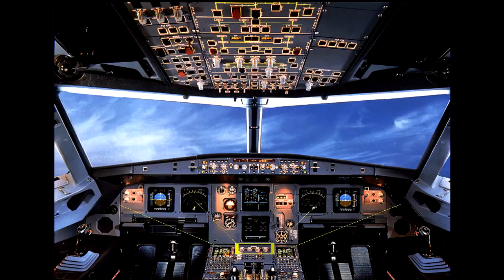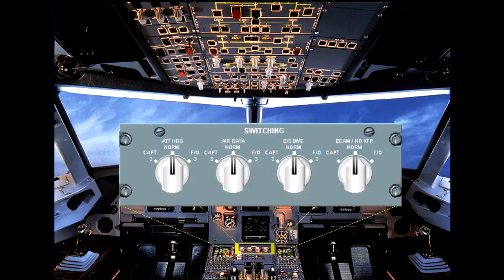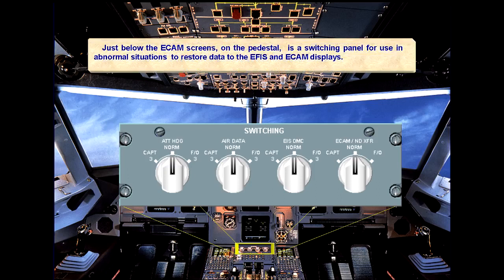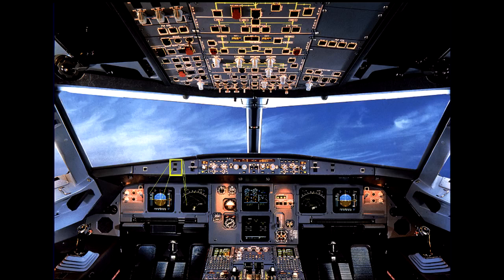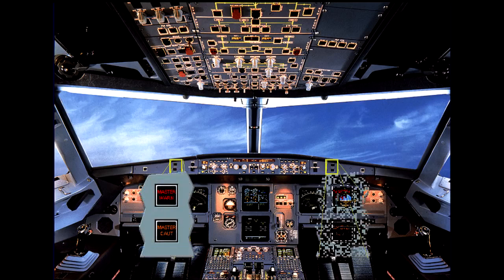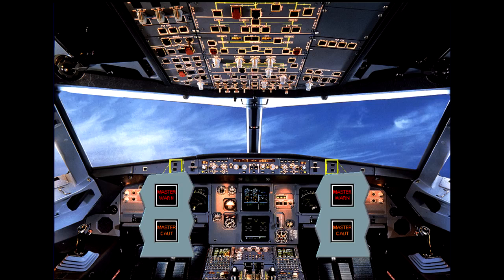Just below the ECAM screens on the pedestal is a switching panel for use in abnormal situations, to restore data to the EFIS and ECAM displays. In front of each pilot there are two attention getters: a red master warning and an amber master caution. As a further means of getting the pilot's attention, there is a loudspeaker on each side of the cockpit for aural alerts and voice messages.